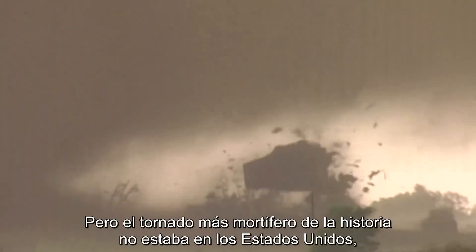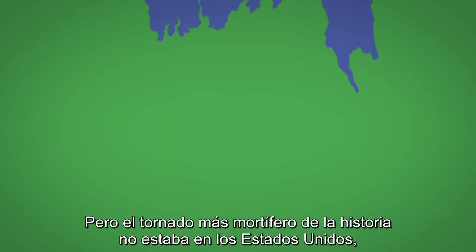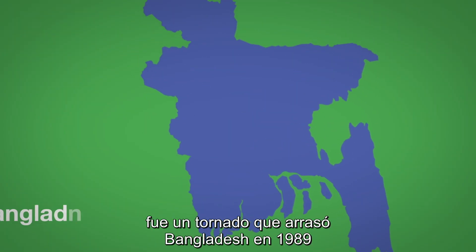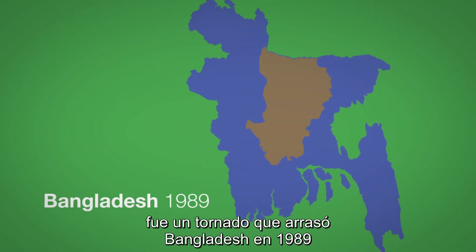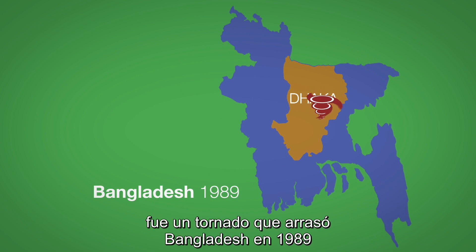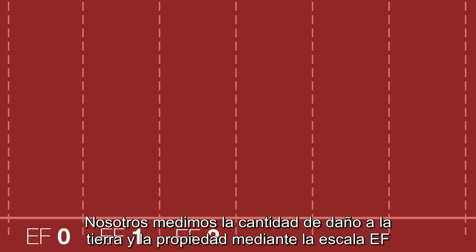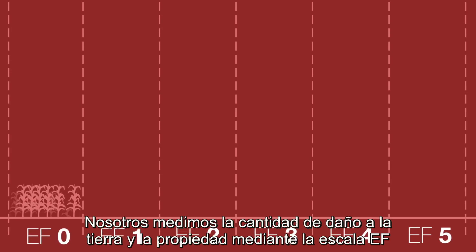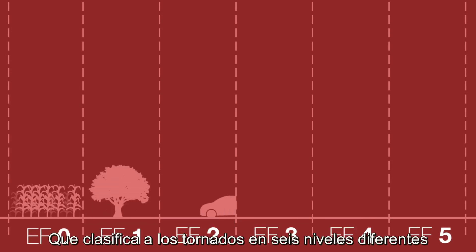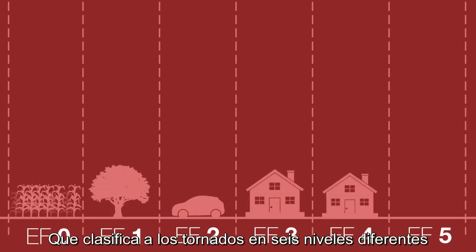The deadliest tornado in history was not in the United States, but a tornado that ripped through Bangladesh in 1989, killing an estimated 1,300 people. We measure the amount of damage to land and property using the EF scale, which ranks tornadoes on six different levels.